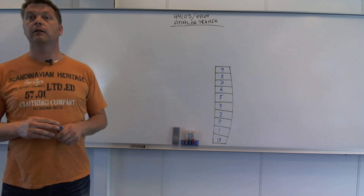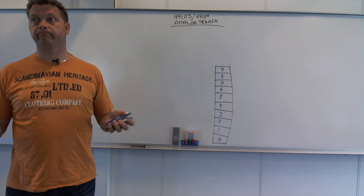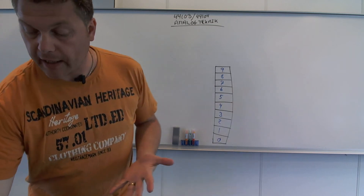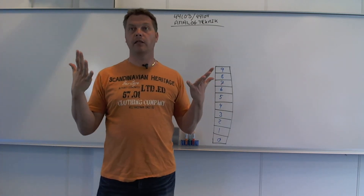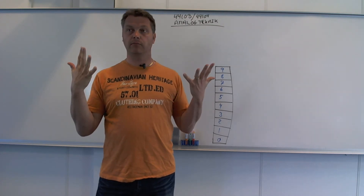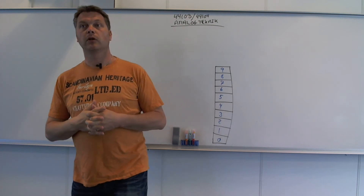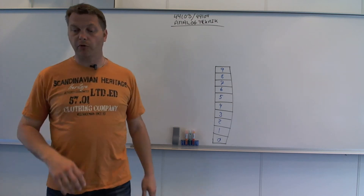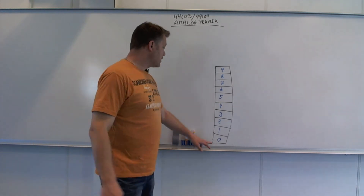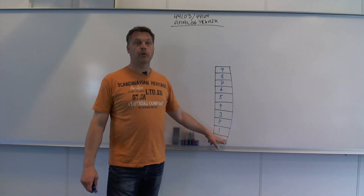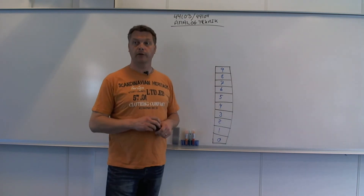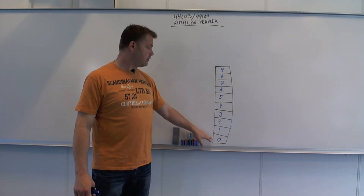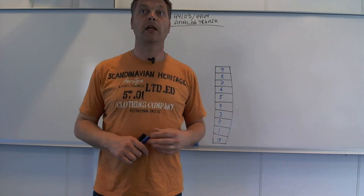Det er et arabisk talsystem - faktisk er det et hindu-arabisk talsystem, hvis man skal være helt nørdet omkring det. Det arabiske talsystem kom sig af, at man havde 10 fingre, så vi havde 10 værdier fra 1 til 10. Men i Østen fandt man så ud af, at man kunne få talværdier til at gå i minus, så man blev nødt til at have et balancepunkt. Og det er 0 som balancepunkt mellem det positive og de negative talværdier. Det er en kombination af det arabiske 1 til 10 og 0 ude fra Østen.